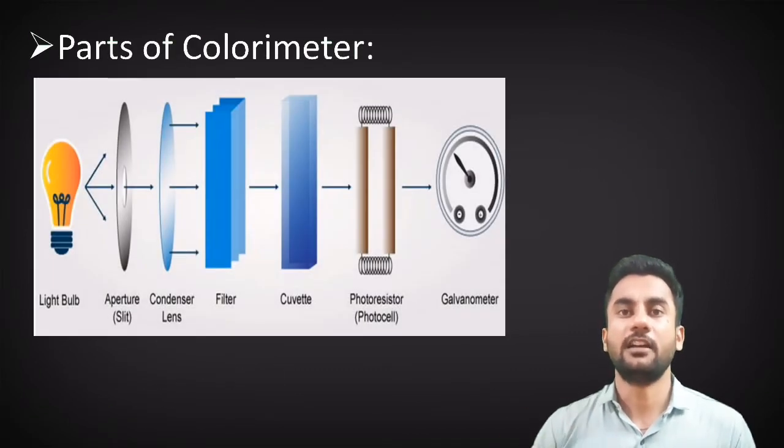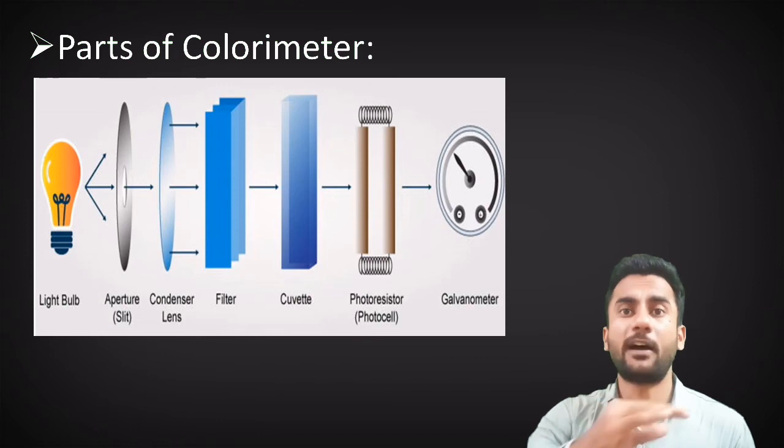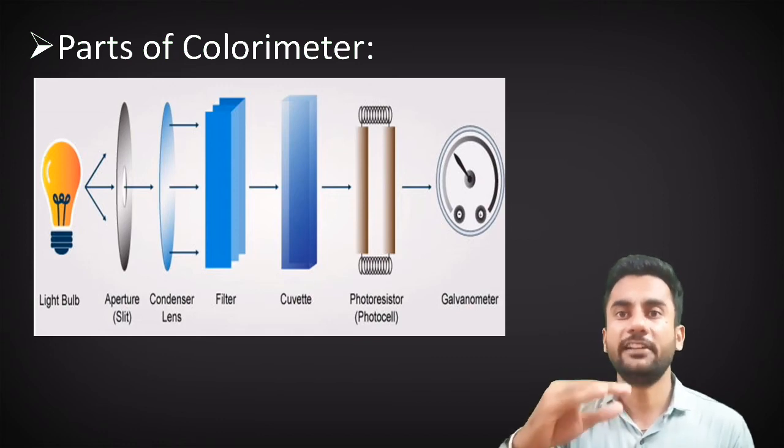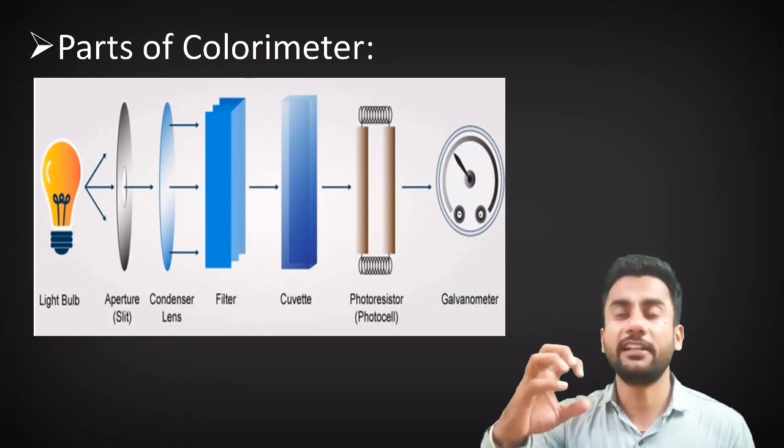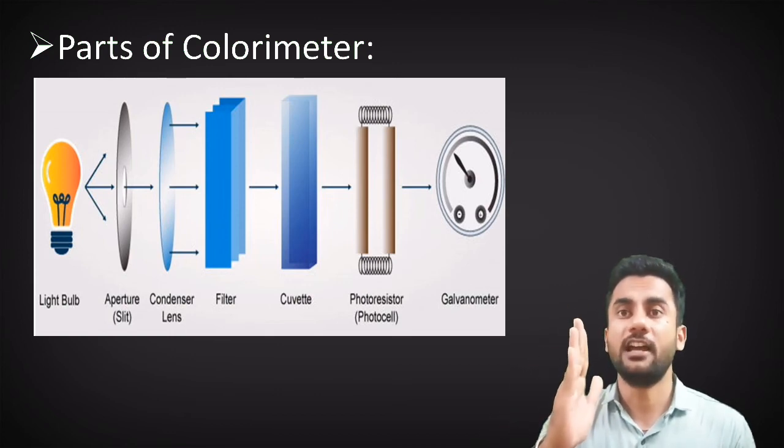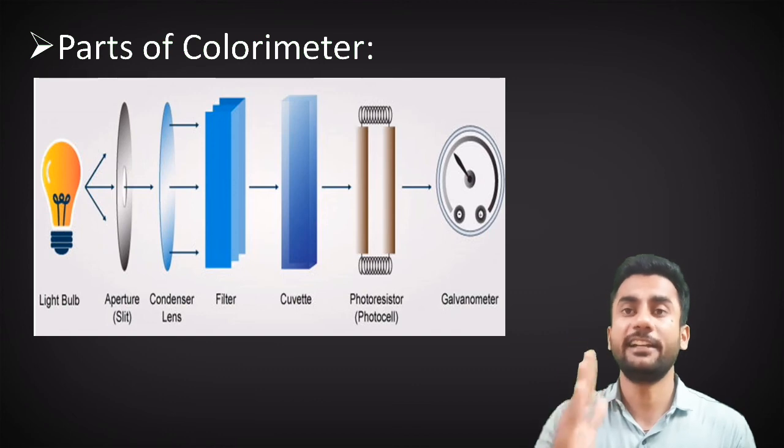Now let us see the parts of the colorimeter. The light from the bulb is allowed to pass through the slit, condenser, filter, and the cuvette containing the sample. The radiation coming out from the cuvette is allowed to incident on the photocell. This photocell converts the optical signal into electrical signal which can be noted on the galvanometer.